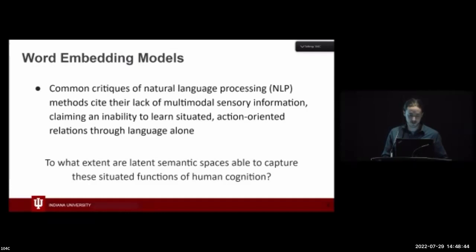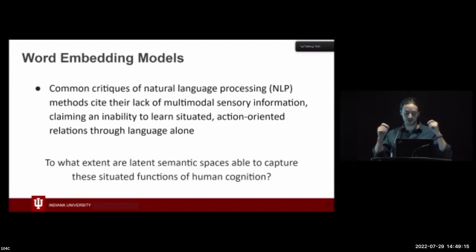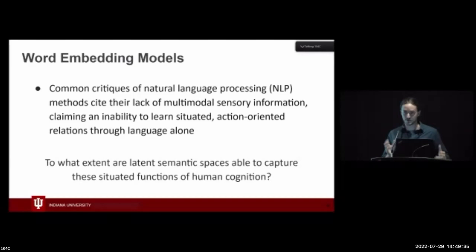These models have shown a lot of promise in many different tasks. However, there have been a number of critiques, in particular around their inability to take into account situated properties of words — they're trained on text samples alone. These arguments go that without access to the actual rich experiential properties of these concepts, if you're only taking text into account, you're missing out on an entire history of properties of these words. If you're just learning the word 'dog' and the words it co-occurs with, you're missing out on the human experience of dogs — the smells, the feels, the experiences. This leads into the general question of to what extent are these latent semantic spaces able to capture the situated functions of human cognition.